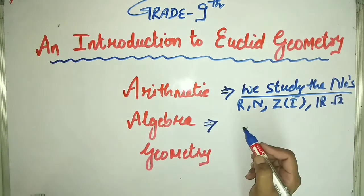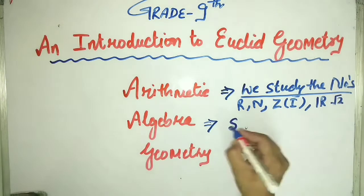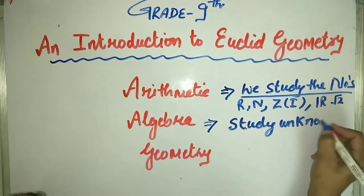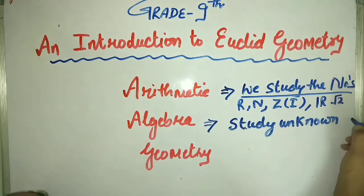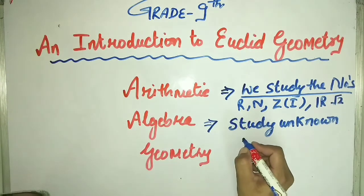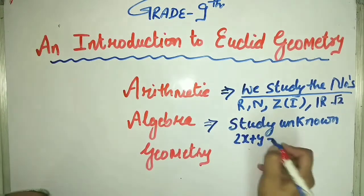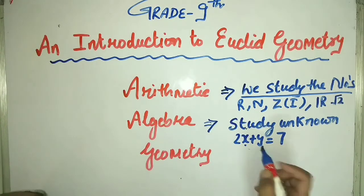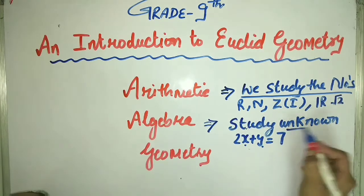And what is algebra? In algebra, we study about unknown variables. Like, recently we have done a chapter of linear equations. In the linear equation, you studied about unknown variables — for example, 2x + y = 7, where x is unknown and y is unknown. So in algebra, we study about the unknown variables.